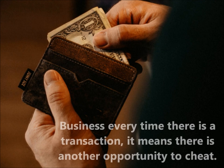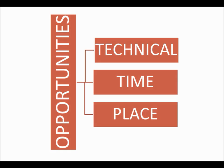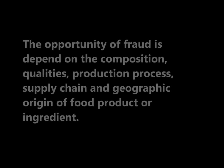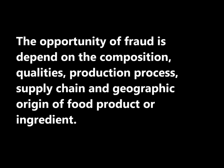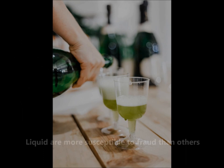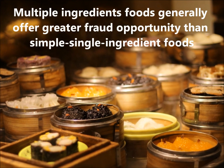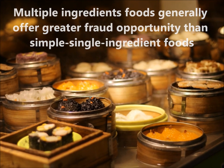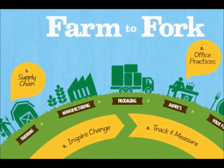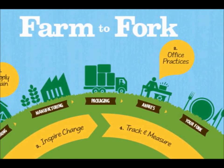Regarding Opportunities: in a business, every time there is a transaction, there is another opportunity to cheat. Opportunities can be identified as technical opportunities and opportunities in time and place. The opportunity for fraud depends on the composition, qualities, production process, supply chain, and geographic origin of the food product or ingredient. For example, liquids are more susceptible to fraud than others. Complex foods with multiple ingredients generally offer greater fraud opportunity than simple single-ingredient foods. Longer supply chains result in higher food fraud risk, access by unauthorized personnel, and lack of physical safeguards.